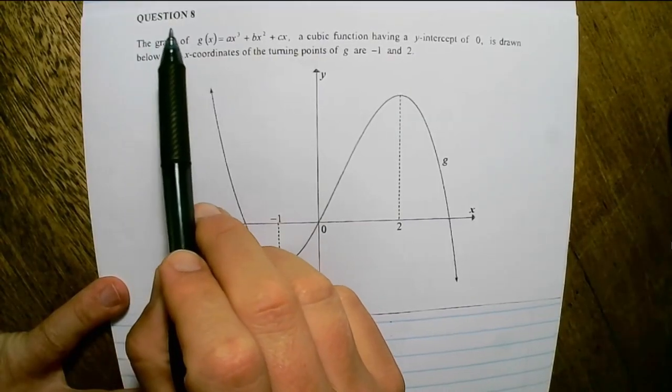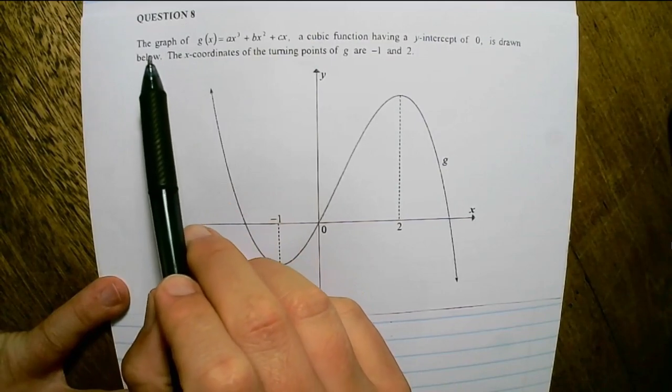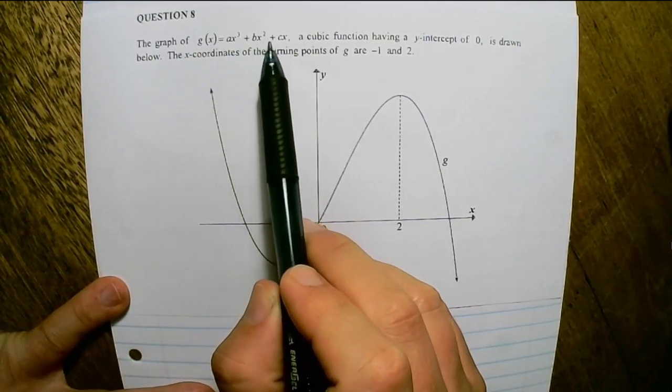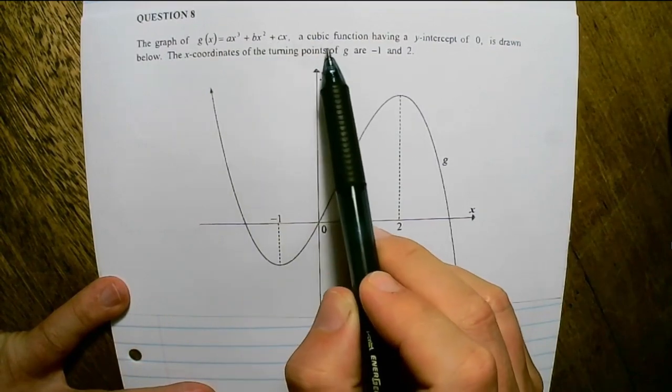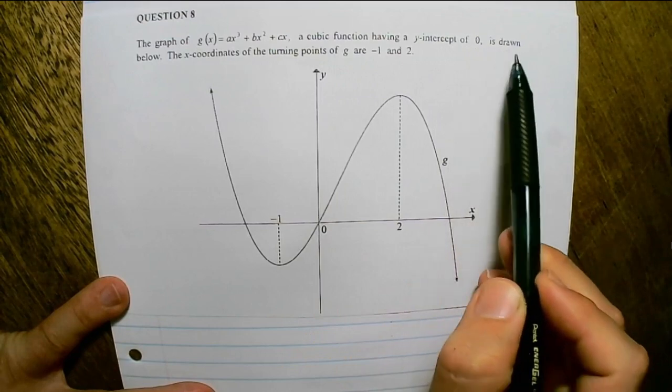We are going on with question 8 of paper 1, November 2020. The graph of g(x) equals ax cubed plus bx squared plus cx, a cubic function having a y-intercept of 0, is drawn below.